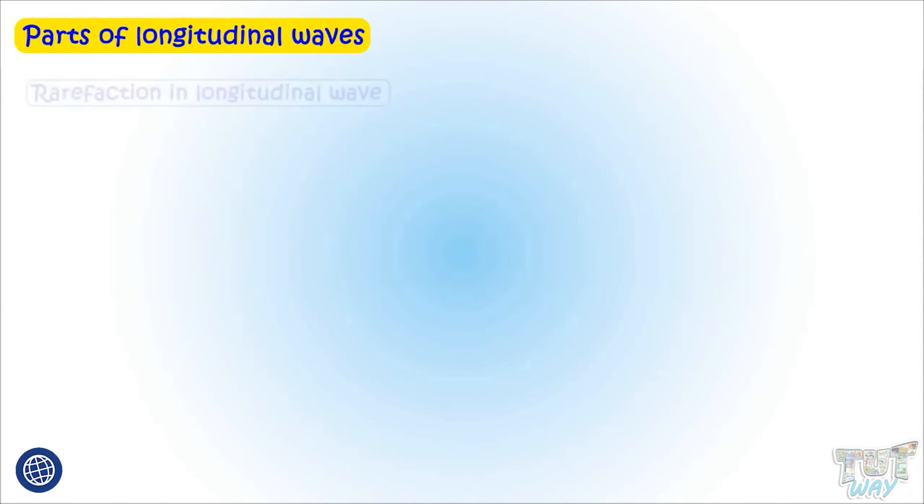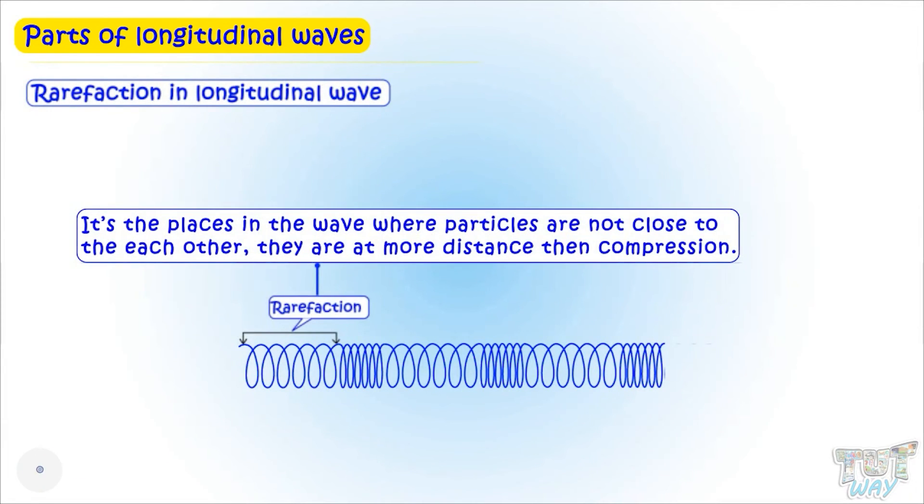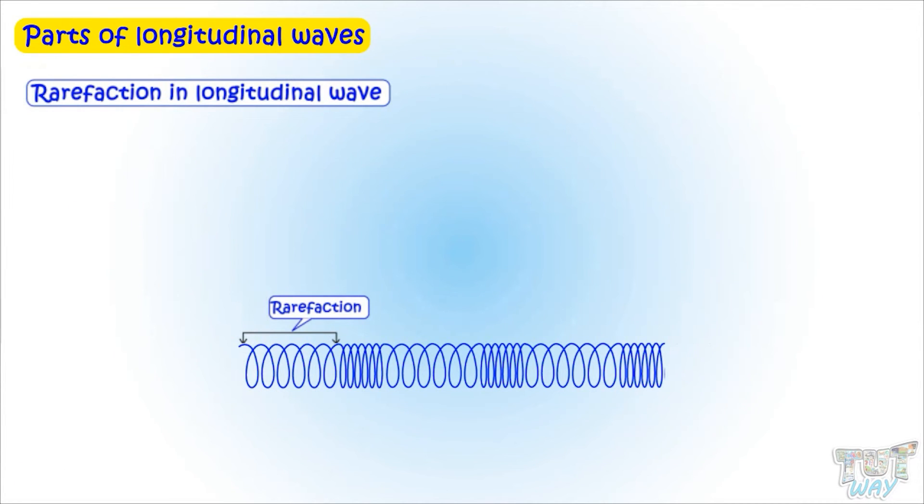Next is what is rarefaction. It's the places in the wave where particles are not close to each other. They are at more distances than compression. So, you can clearly see in this wave there are three rarefactions in this wave.